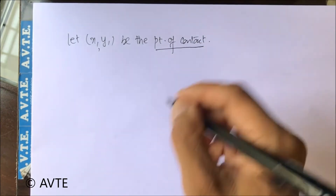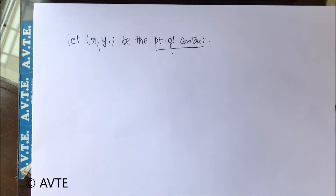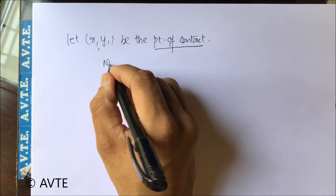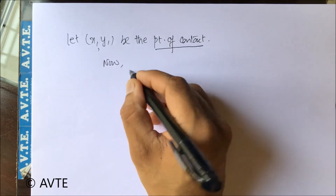Point of contact means the point at the curve through which the tangent is passing. Now differentiating for the slope.